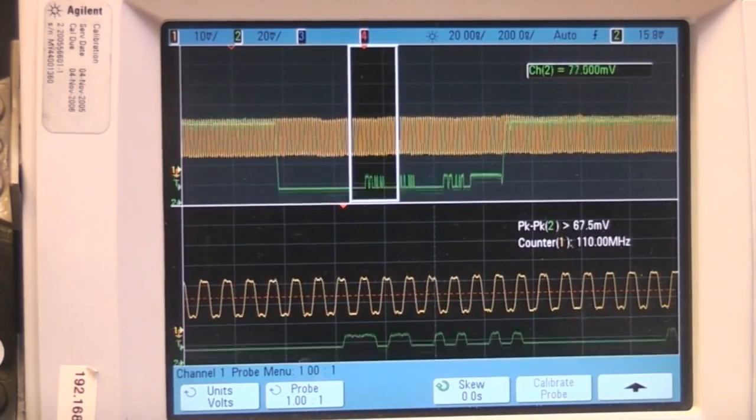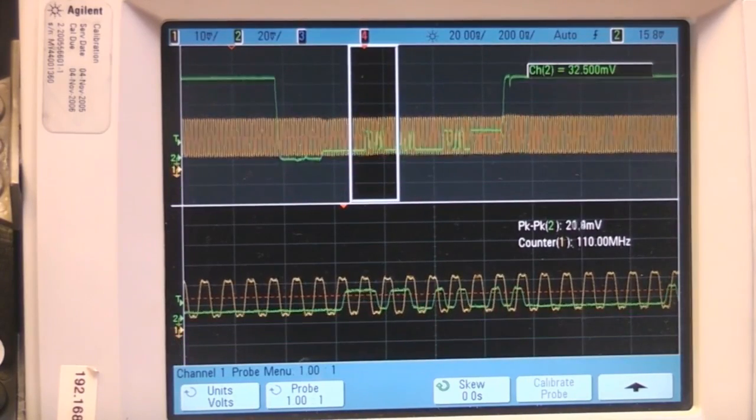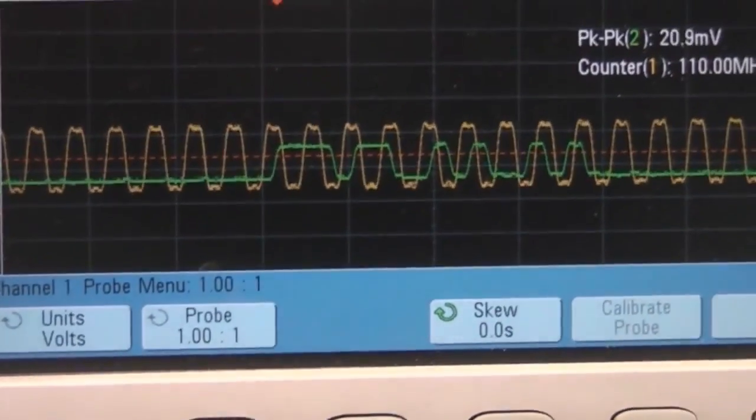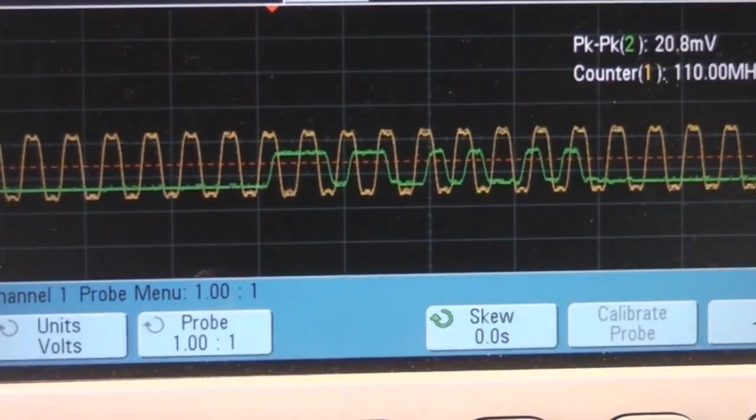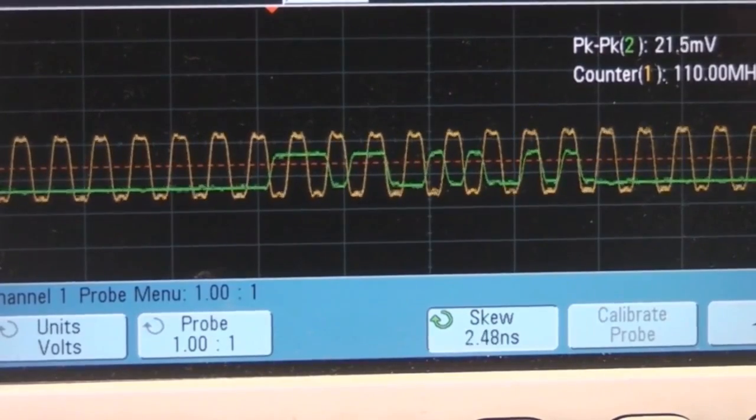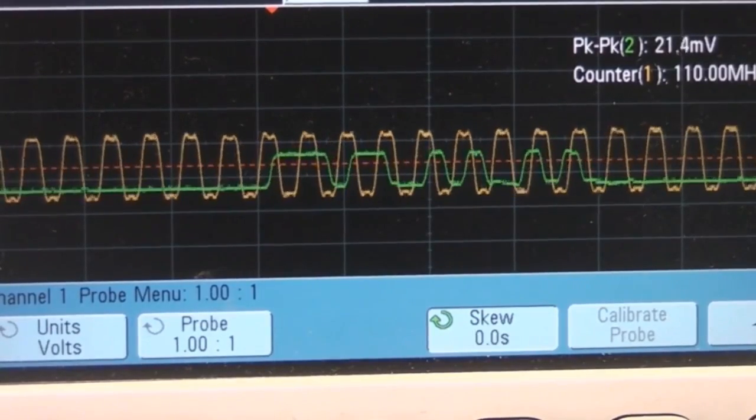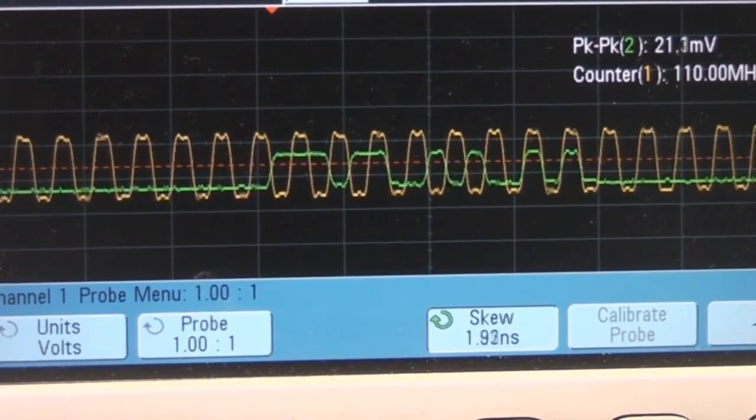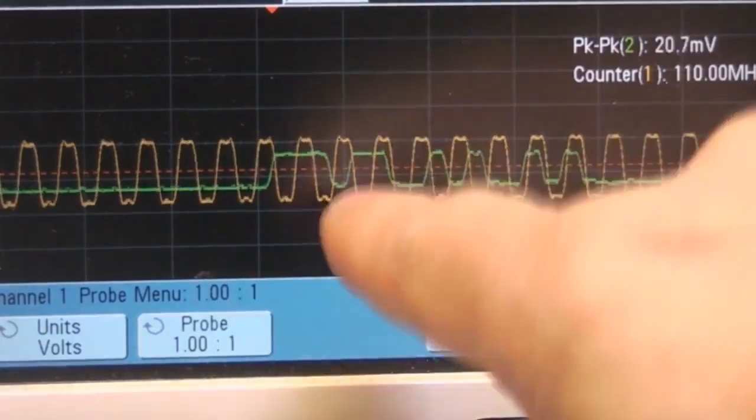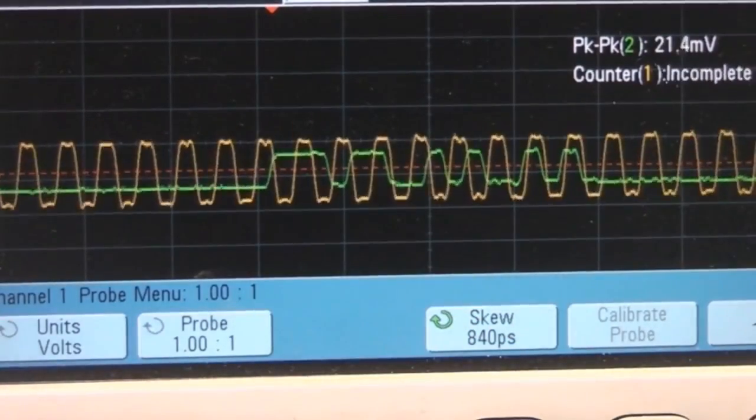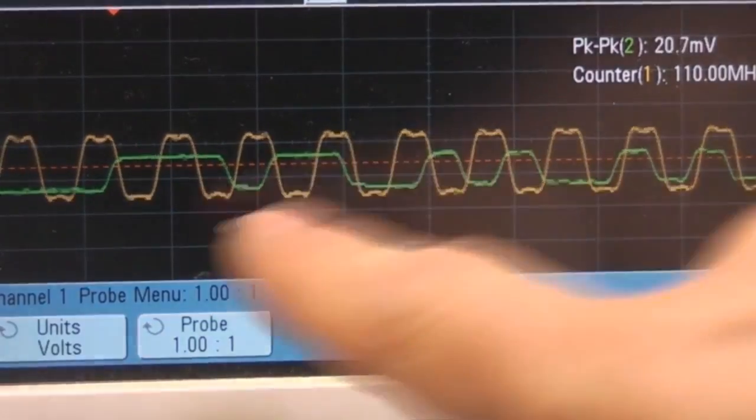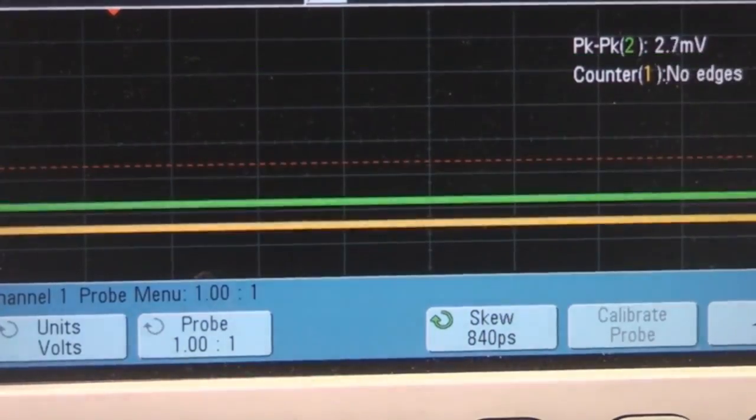And one thing you see there's obvious skew between the two channels. The scope has the ability for an individual probe to actually add enough time offset so we can actually get those two line up - not necessarily with each other but in a way that makes it easy for us to figure out the data values. Just as a convenient reference, you see this is actually DDR data - you've got the data changing on both clock transitions - so we can actually see that cleanly enough to, if necessary, manually work out one bit at a time what each byte value is.